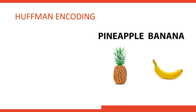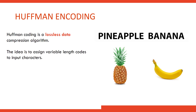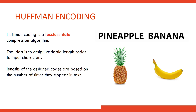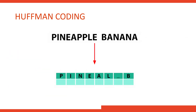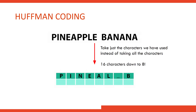The next algorithm is Huffman encoding, another lossless data compression algorithm. The idea is to assign variable-length codes to input characters based on how frequently they appear — the most frequent characters get the smallest code and the least frequent get the largest code, all to save space. Taking 'pineapple and banana' as an example, we identify the unique characters used: P, I, N, E, A, L, underscore for space, and B.